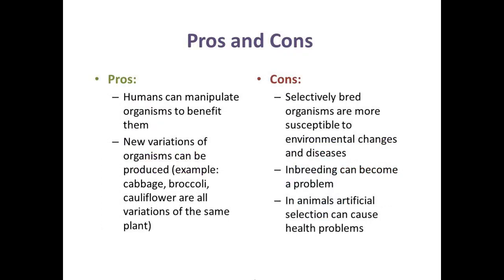As with any process, selective breeding has pros and cons. The pros are related to advantages for humans — the ability to manipulate organisms to benefit them, and the possibility to create new varieties, like the farm pig from the wild boar. The cons are that selectively bred organisms are more susceptible to environmental change and disease. Inbreeding can occur because the offspring used for breeding will be closely related. Also, animals after selective breeding can have health problems.